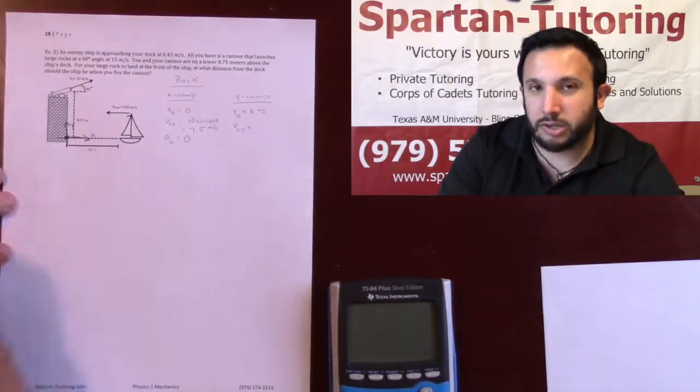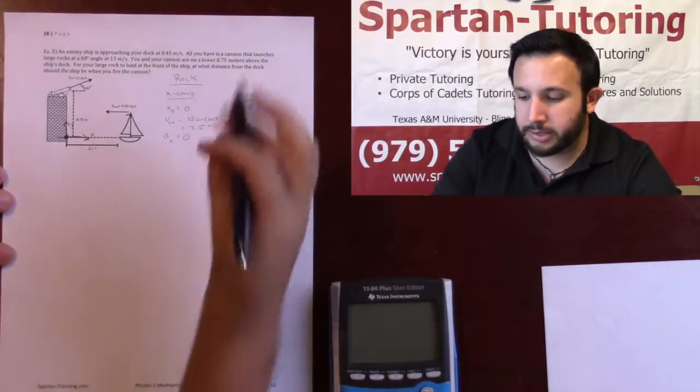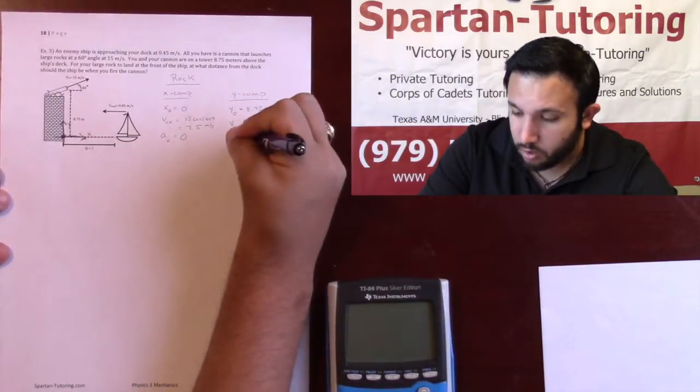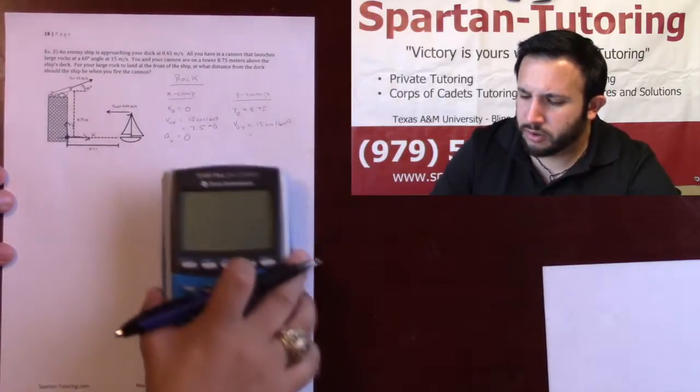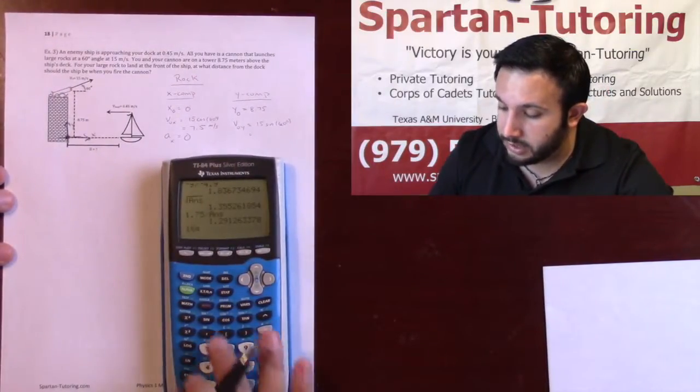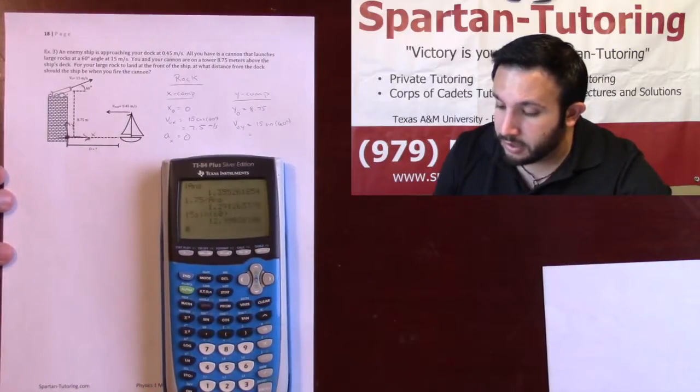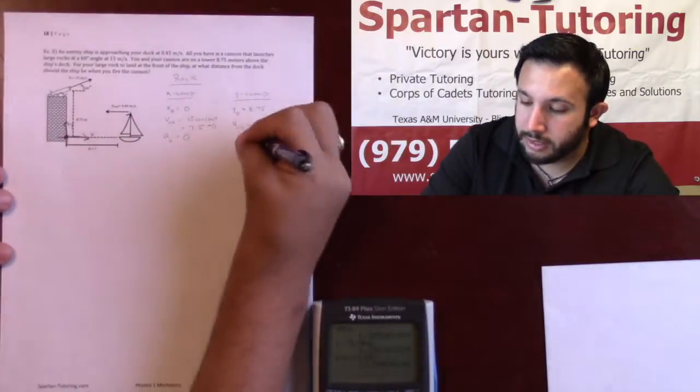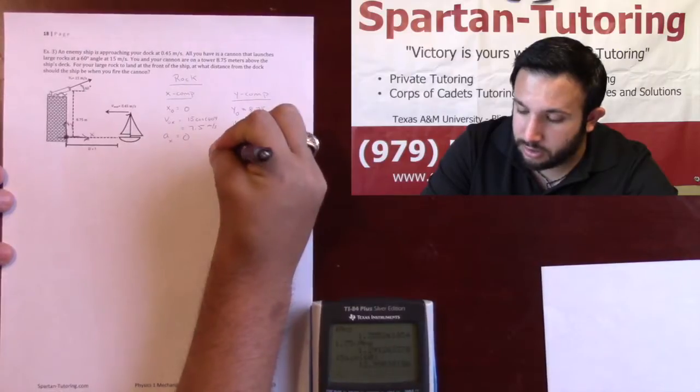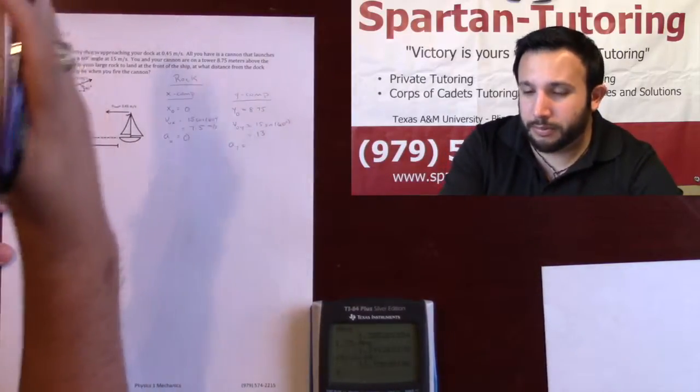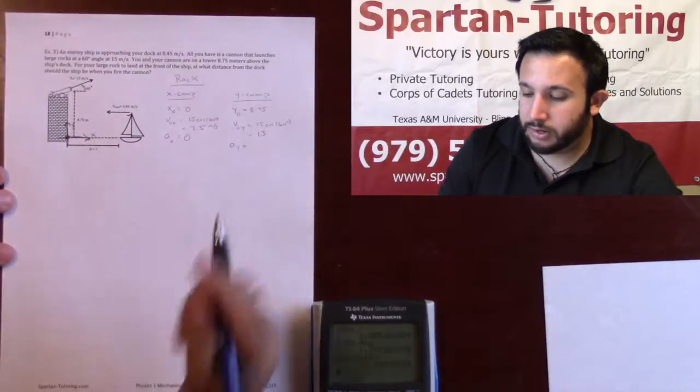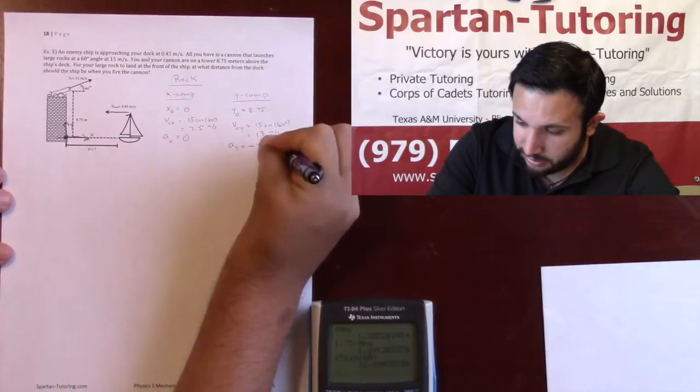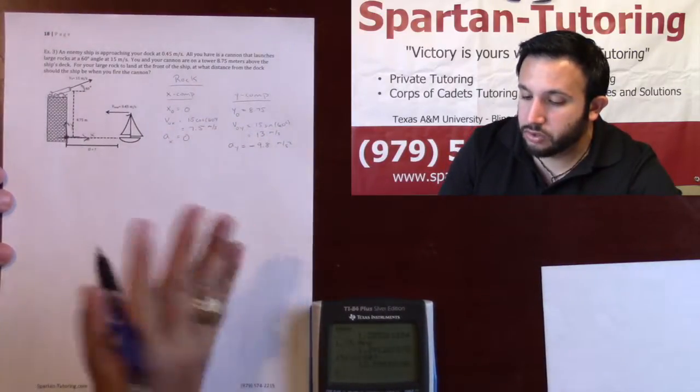Now as for v_0 in the y direction, v_0 in the y direction is opposite my angle, it's also going positive, so it'll be a positive 15 sine of 60 degrees, which we know sine of 60 degrees is square root of 3 over 2. Let's go ahead and actually put this in our calculator: 15 sine 60 degrees, let's call it 13. And acceleration in the y direction, because my positive y is pointed up and gravity is always pointed down, that's why it's a negative 9.8. This is meters per second squared.